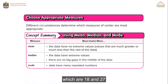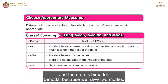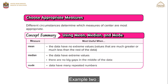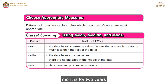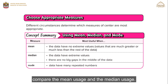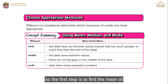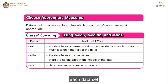Choosing appropriate measures: Different circumstances determine which measures of center are most appropriate. The mean is most useful when the data have no extreme values — extreme values are values much greater or much less than the rest of the data. The median is most useful if the data have extreme values, or if there is no big gap in the middle of the data. The mode is most useful when the data have many repeated numbers.